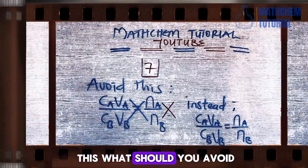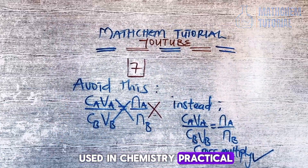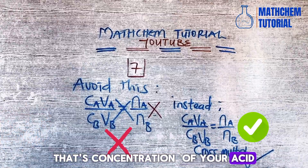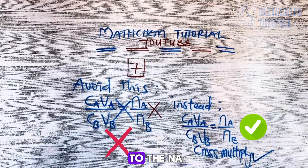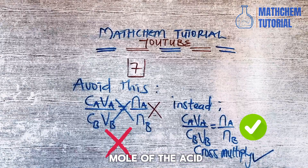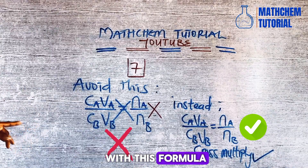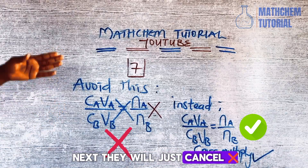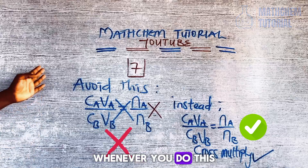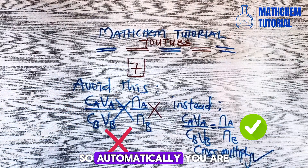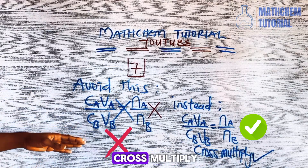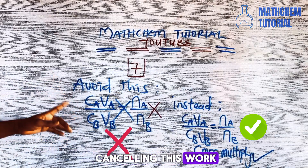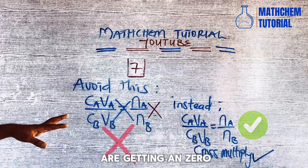Number seven: students must avoid incorrectly canceling in the titration formula. The formula used is: (Ca × Va) / (Cb × Vb) = na / nb, where Ca is concentration of acid, Va is volume of acid, Cb is concentration of base, Vb is volume of base, na is moles of acid, and nb is moles of base. Many students, after writing this formula, draw a cross-cancel sign through it thinking it means cross-multiplication — this automatically cancels your work and you score zero. Instead, write 'cross multiply' below it to show your intent, and do not draw the canceling cross sign.